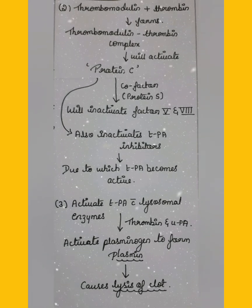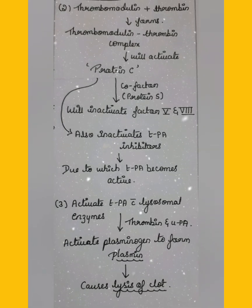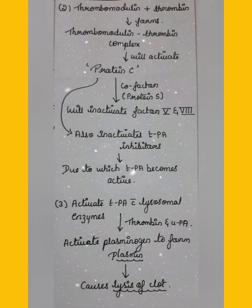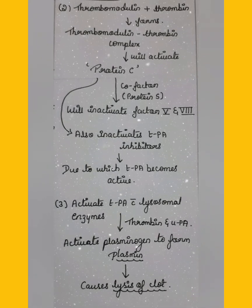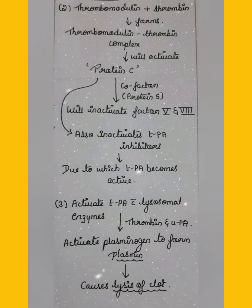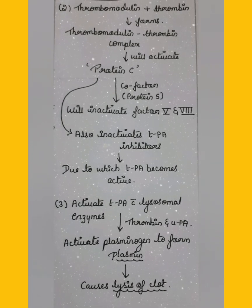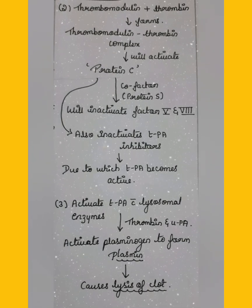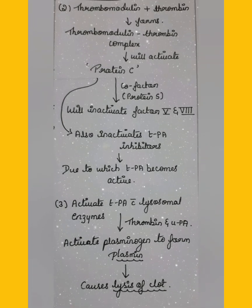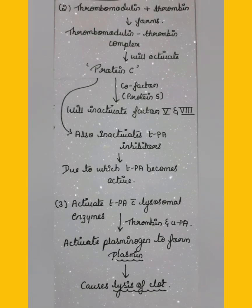This complex will start activating protein C. Protein C, in the presence of its cofactor protein S, will inactivate factor V and factor VIII. Protein C will also inactivate the TPA inhibitors, due to which TPA becomes active. In the last step, this activated TPA along with lysosomal enzymes and in the presence of thrombin and urokinase plasminogen activator will activate plasminogen.